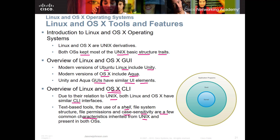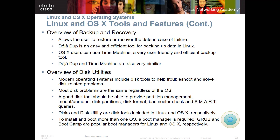When we look at backup and recovery, it does allow the user to restore or recover data in case of a failure. DejaDup is an easy and efficient tool for backing up data in Linux, and there are some other open source backup tools as well. OS X users can use Time Machine — it's a user-friendly, efficient backup tool. They are very similar because they're both based on a similar Unix operating system.